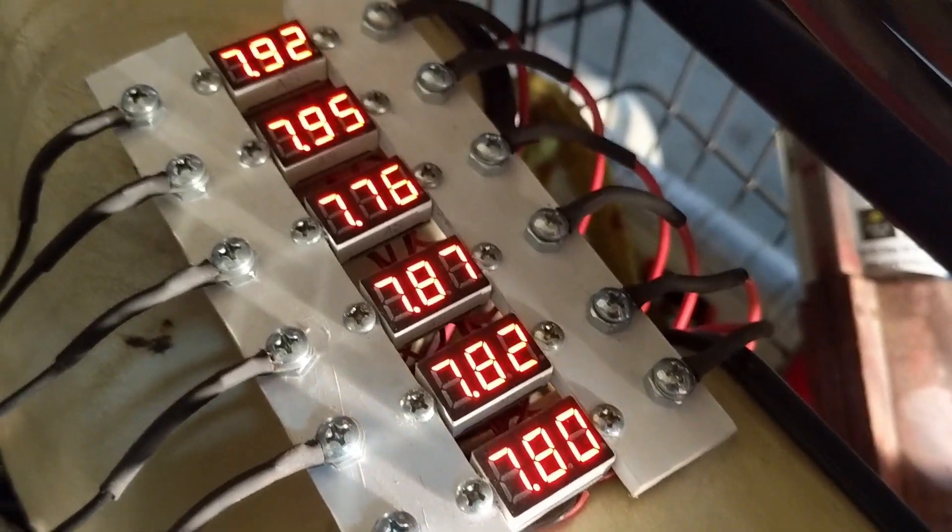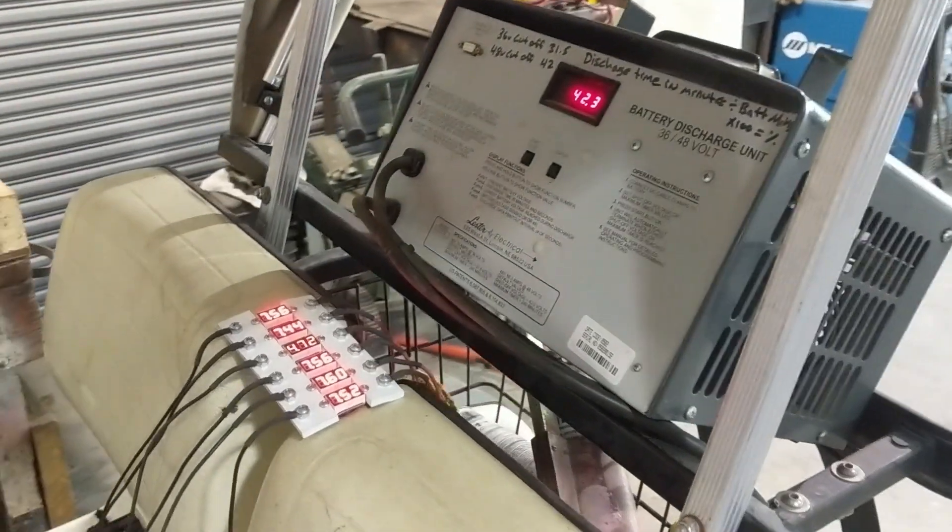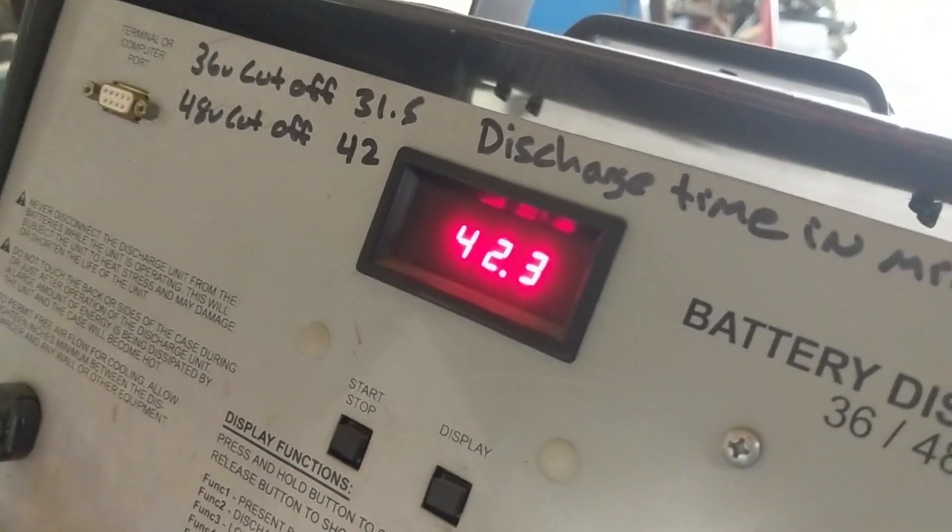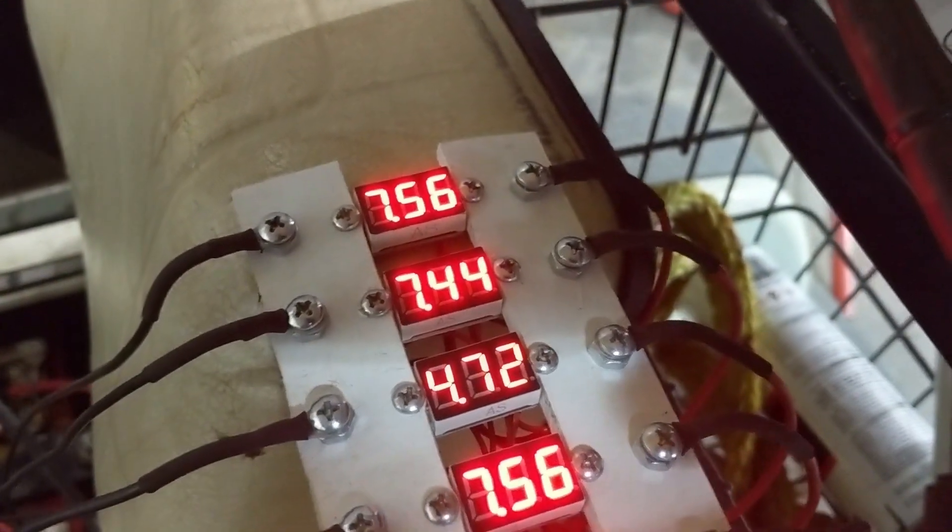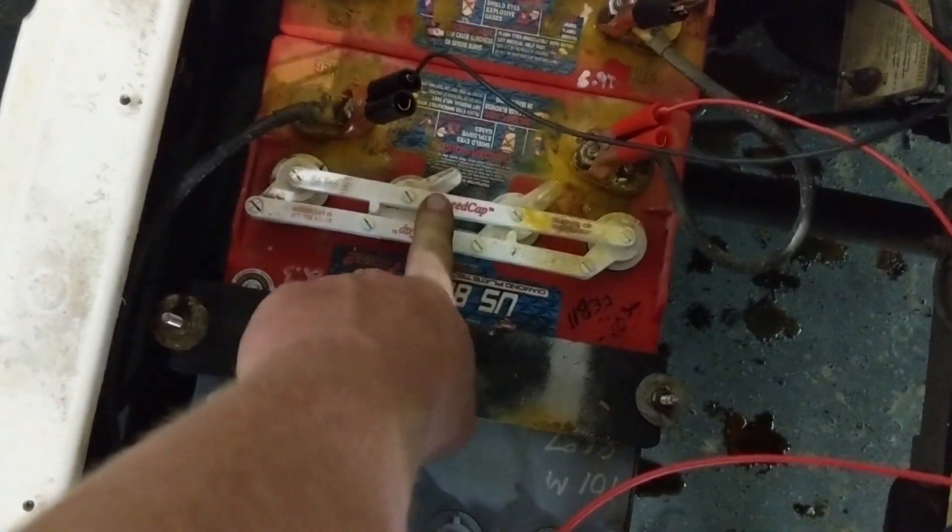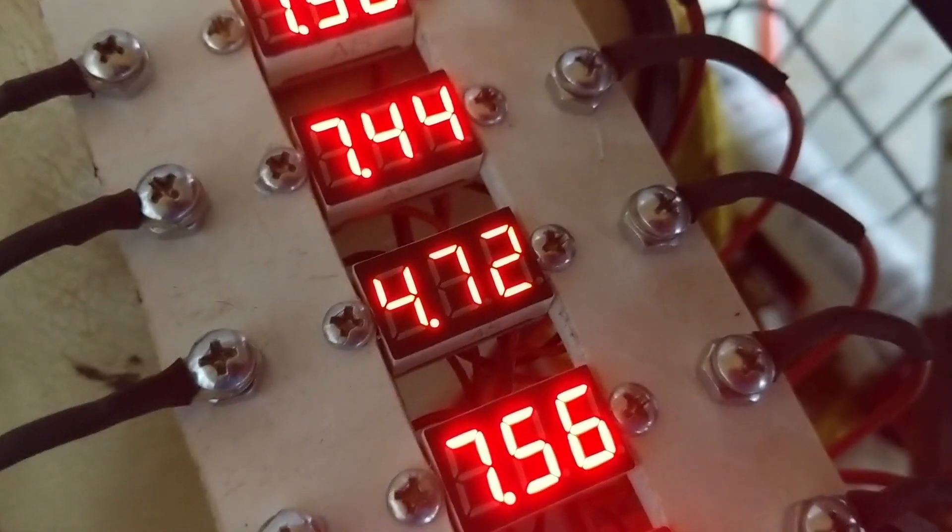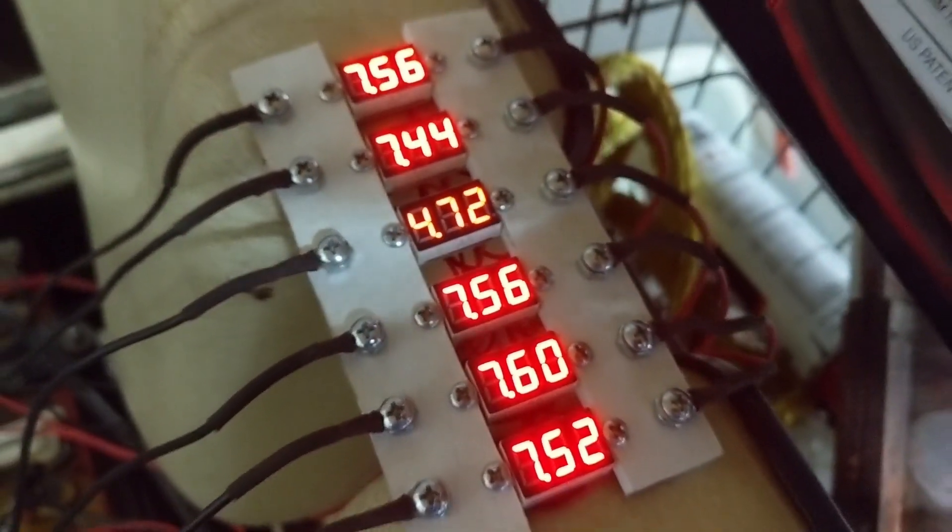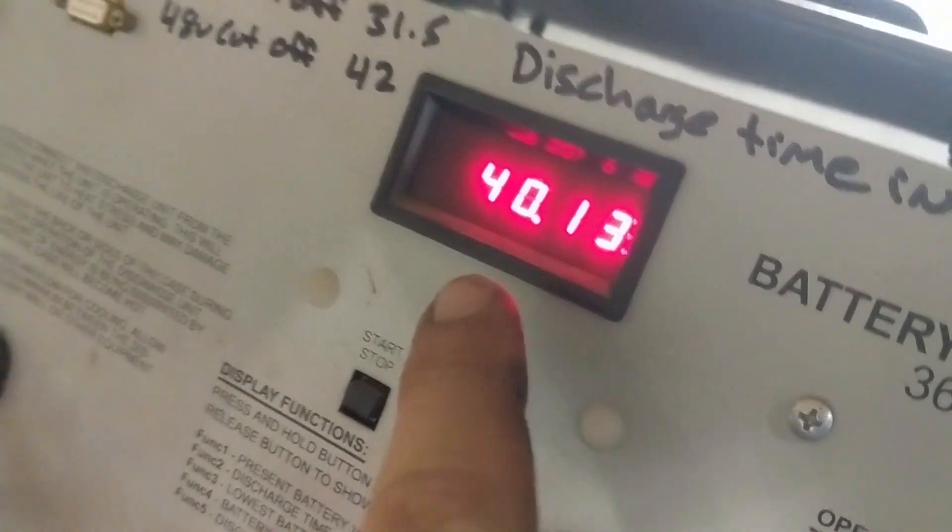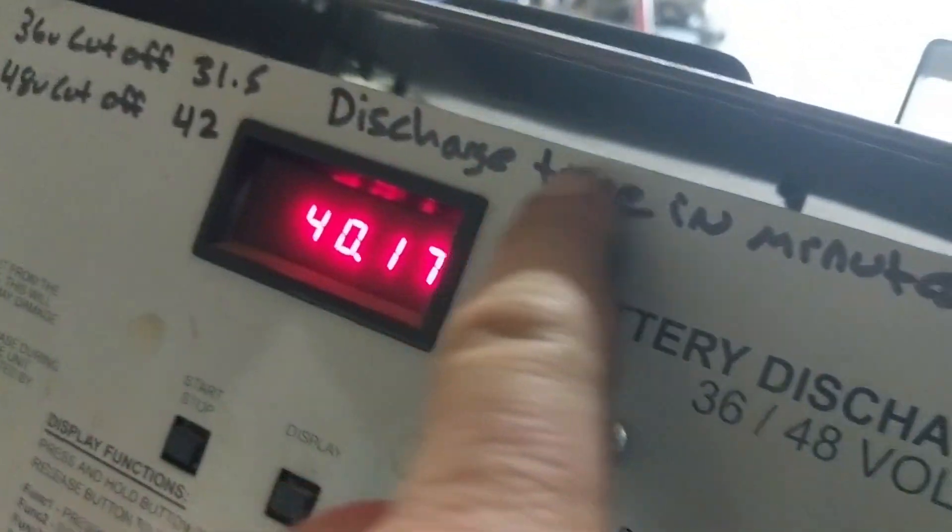Alright guys, so here we are at 0.3 volts before cutoff voltage, 42.3. As you can see our batteries are showing their individual voltages and they don't look too bad except for that one there which correlates to number three, 4.72. You can actually see the difference in the brightness on the meter. It's definitely lower. This shows us that it's been 40 minutes since I started the test. If you actually take these voltages and the discharge time and do an equation, it'll give you the percentage life that each of these batteries has left in it.